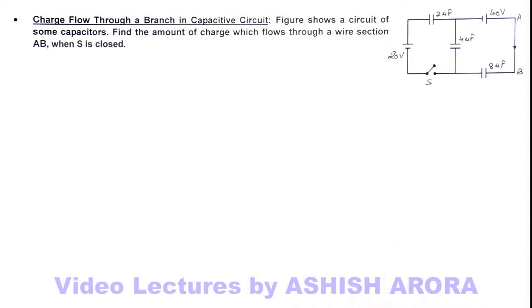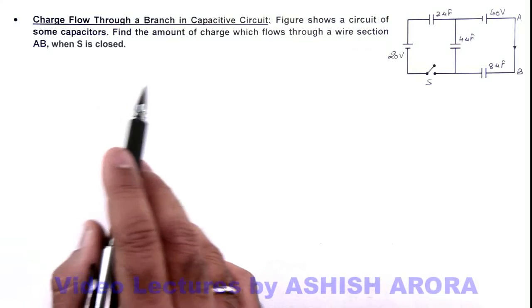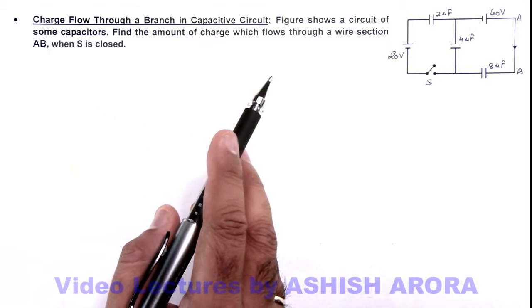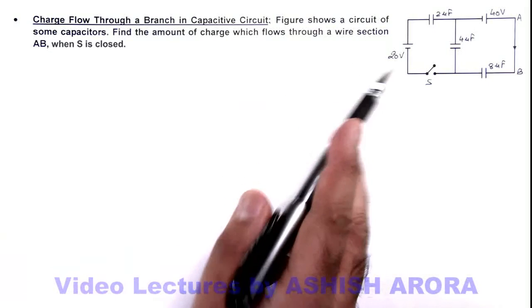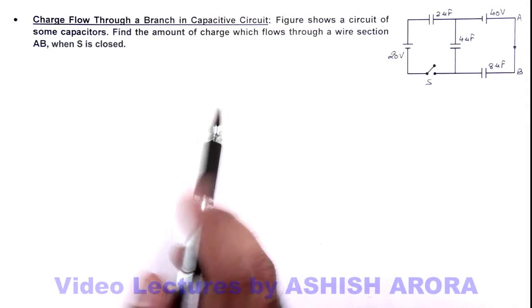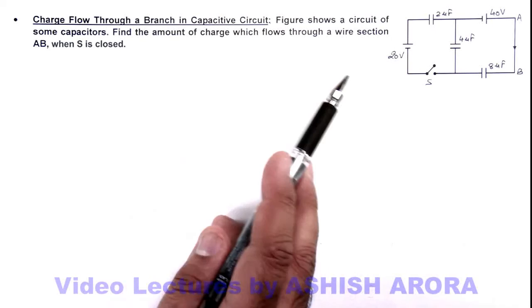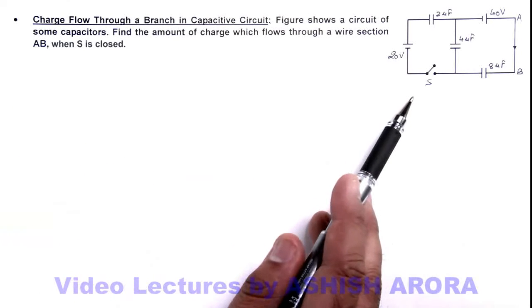In this illustration, we'll study the charge flow through a branch in a capacitive circuit. Here we are given a figure which shows a circuit of some capacitors, and we are required to find the amount of charge which flows through wire section AB when switch S is closed.